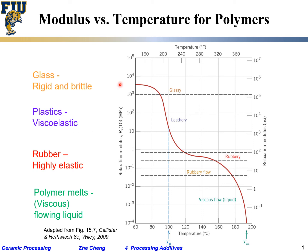This plot shows the change in modulus — how rigid the plastic is — versus temperature. When we are well below Tg, the material has high modulus and behaves like a rigid, brittle glass. If it's a polymer, it may also have some crystalline component, but the amorphous portion behaves like a rigid, brittle glass below Tg.